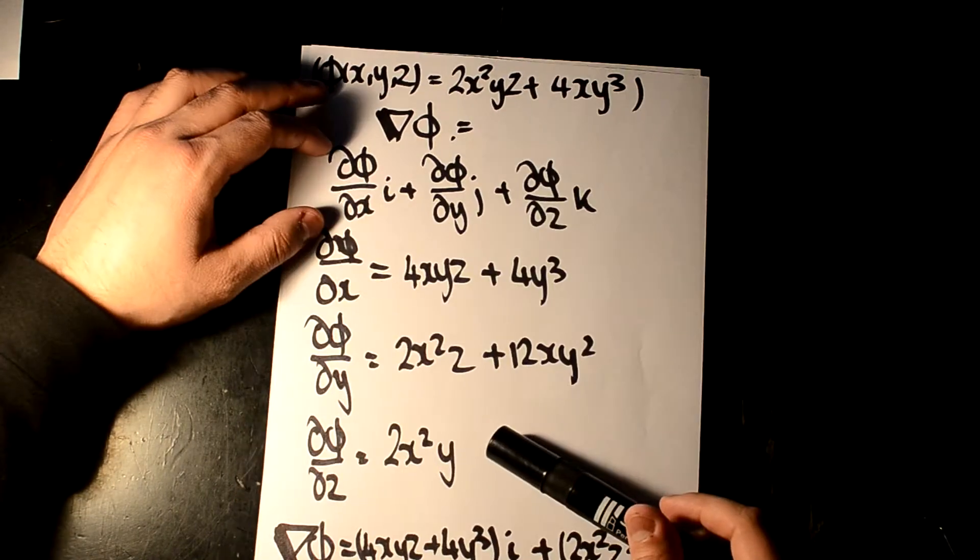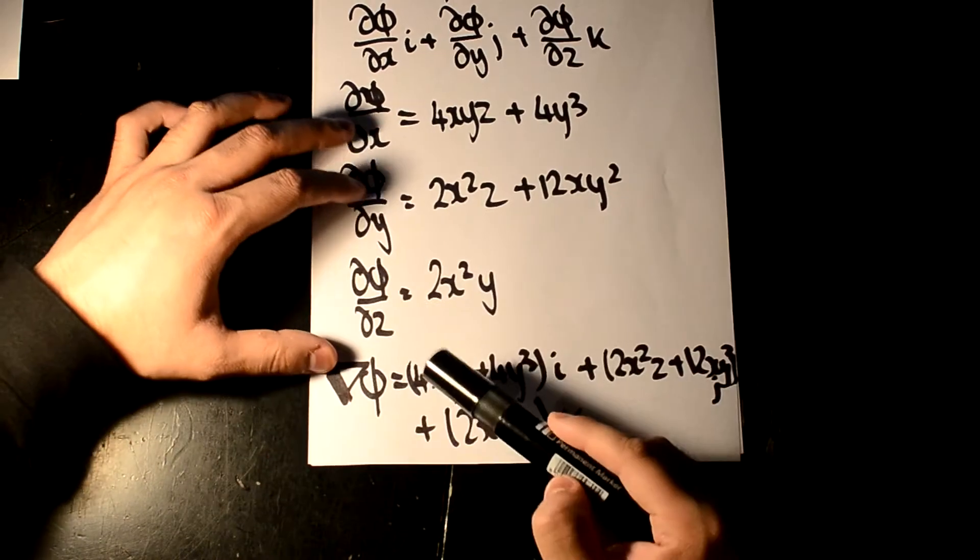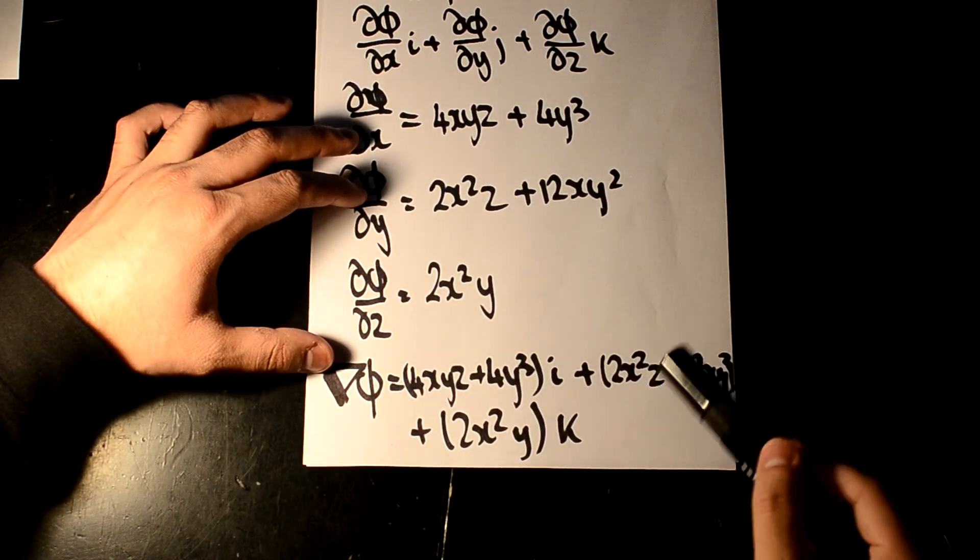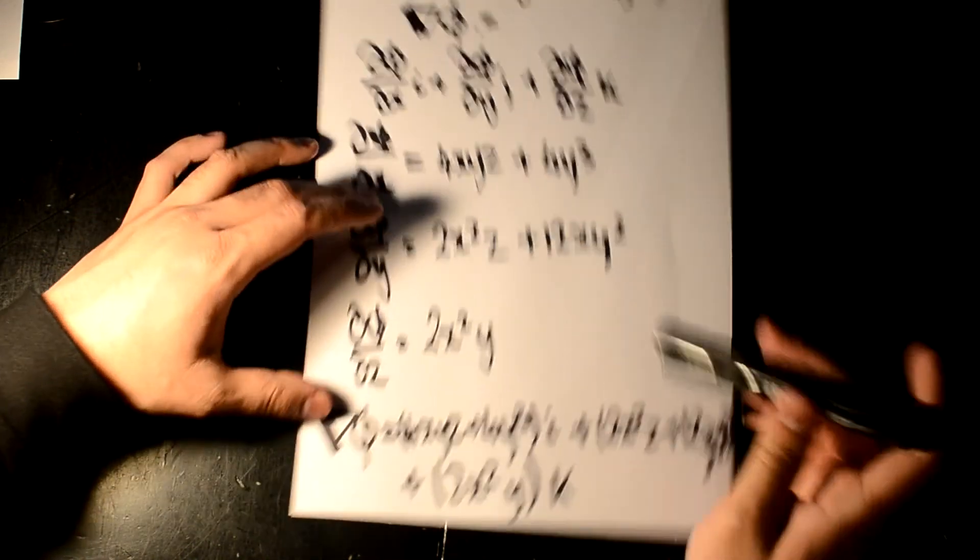And the question may ask you, for example, at point p, where p is 1, 1, 1. All you have to do here is plug in your values of 1, 1, and 1. And you plug it in, you'll get a value in terms of i, j, and k.